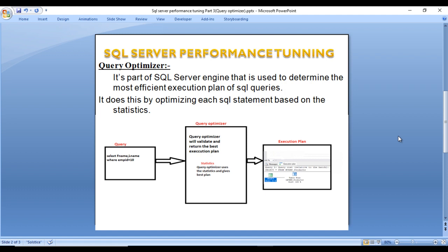As we can see over here, this is our simple query: SELECT first name, last name FROM our table WHERE employee ID equals 10. This query will go to the query optimizer. First, query optimizer will validate and return the best execution plan of the query.